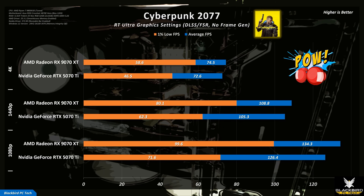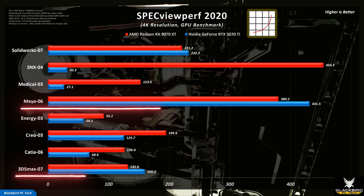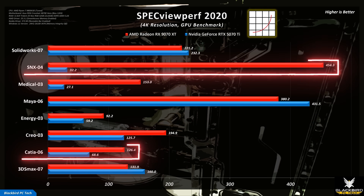If you look at Cyberpunk 2077 and F1 2024, two games that prior-gen GPUs struggled in, you can see that the 9070 XT is not only able to compete with the 5070 Ti, but beat it — which is a truly remarkable result. If we now look at professional workloads, you can see that in some applications, such as Maya and 3ds Max, the 5070 Ti wins, while in others, such as CATIA and NX, the 9070 XT wins. So as with all professional applications, it's important to understand if the software you use is optimized for a specific GPU before making a purchase.